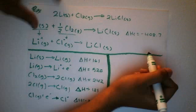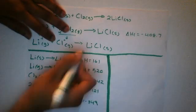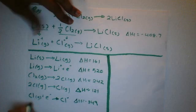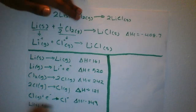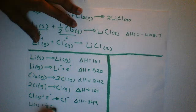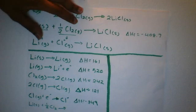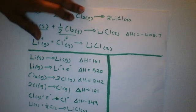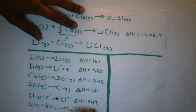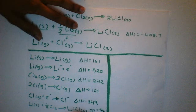Let's not forget the enthalpy of formation. Rewriting it: Li solid plus 1/2 Cl2 gas gives LiCl solid, with delta H equal to negative 408.7 kJ. Now we have all the delta H values we need.